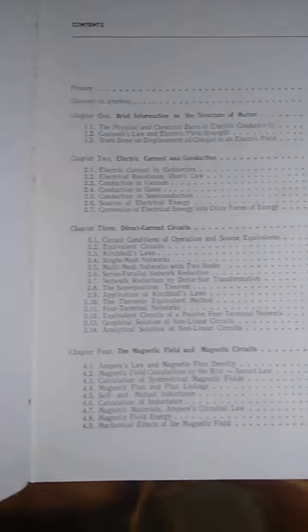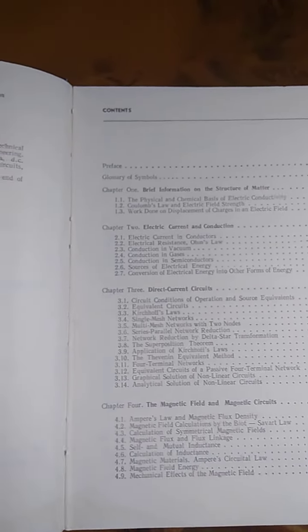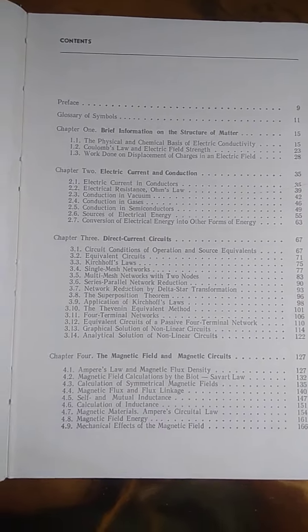This is the copyright page. This book was actually published in 1977, you can see here, and the Russian edition was 1975, fourth Russian edition. Let's check out the contents.